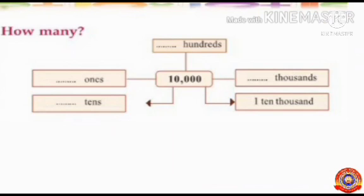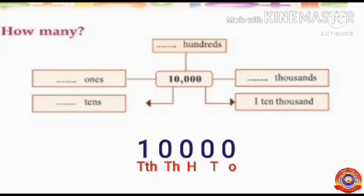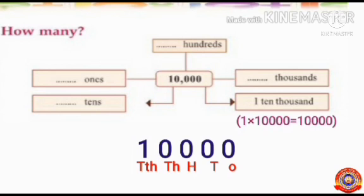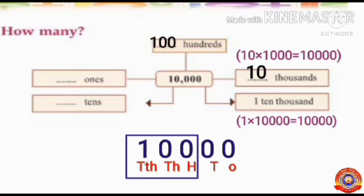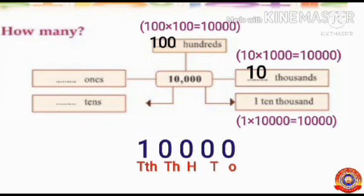See the first activity: how can we arrange ten thousand in different ways? Children, do you know how many ten thousands are there in ten thousand? Yes, one ten thousand is there in ten thousand — that is, 1 × 10,000 = 10,000. Next, how many thousands are there in ten thousand? Yes, ten thousands are there — that is, 10 × 1,000 = 10,000. Next, how many hundreds are there in ten thousand? Yes, hundred hundreds are there — that is, 100 × 100 = 10,000.